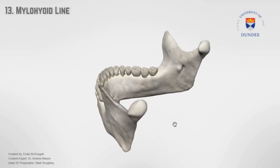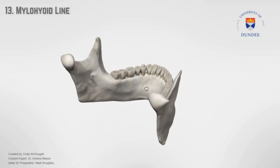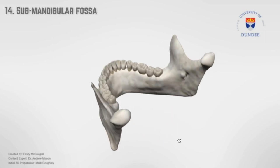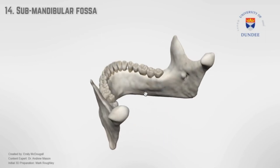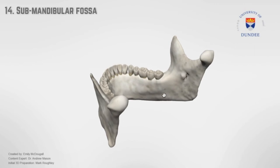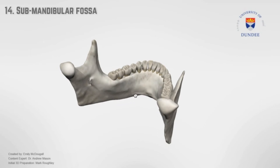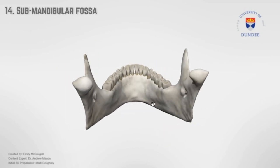Mylohyoid line is the site of attachment for the mylohyoid muscle, as well as the pterygomandibular raphe being attached to the posterior section. Submandibular fossa is a concavity in the lingual part of the mandibular body inferior to the mylohyoid line in the lower molar region, where part of the submandibular gland is situated.